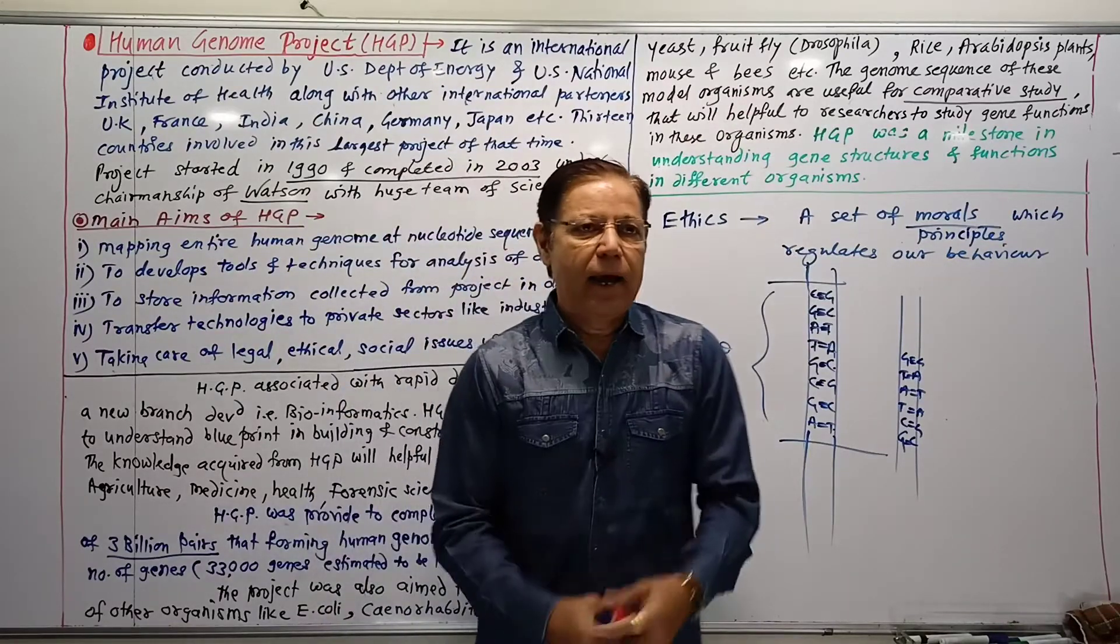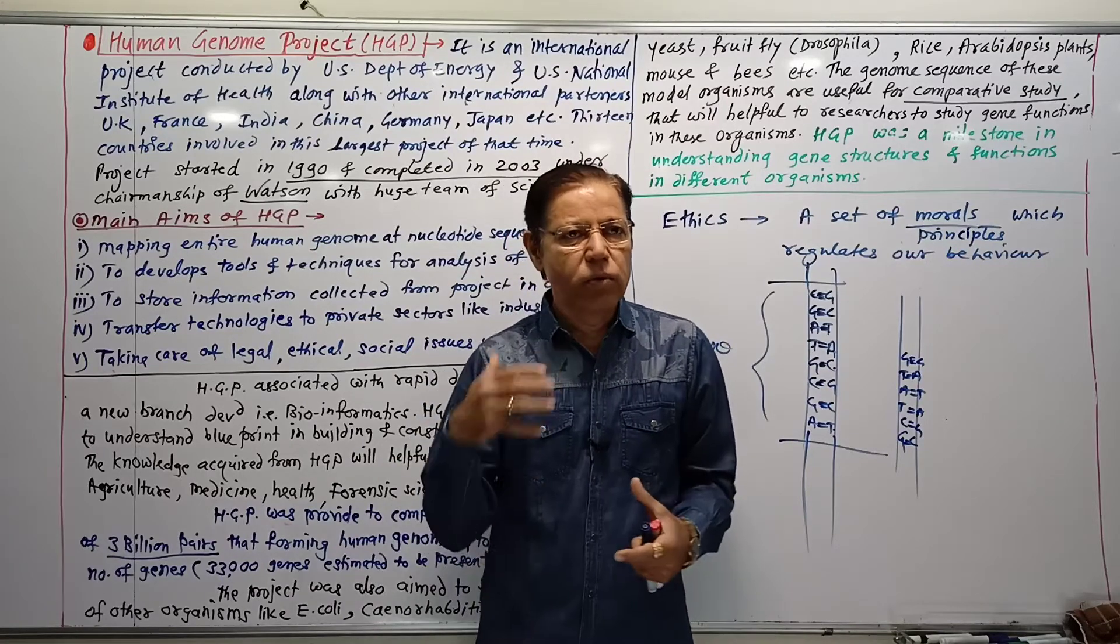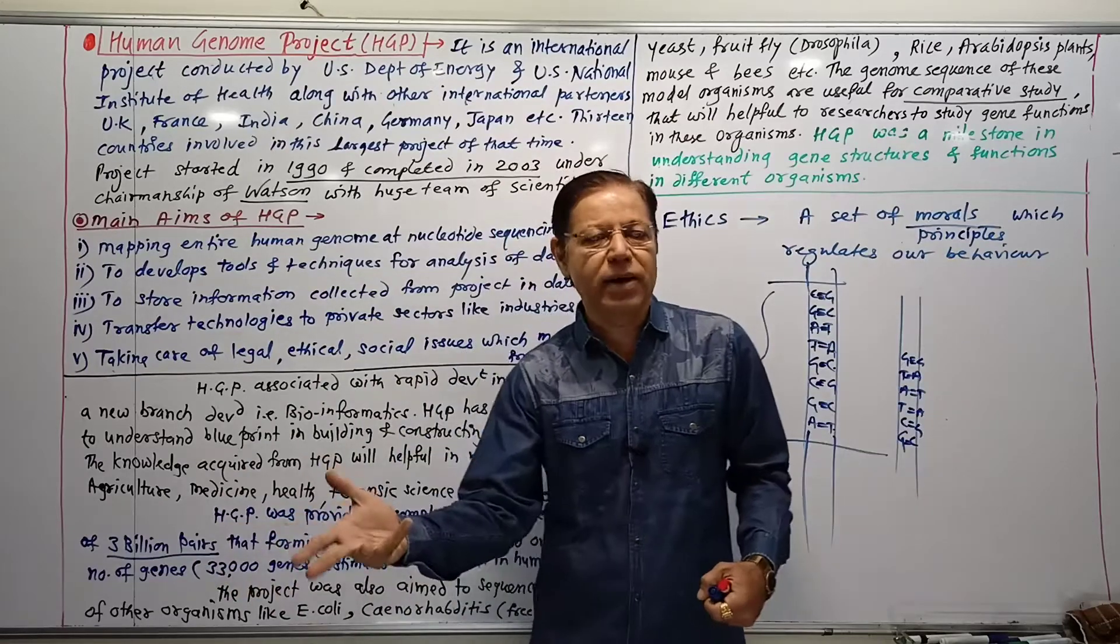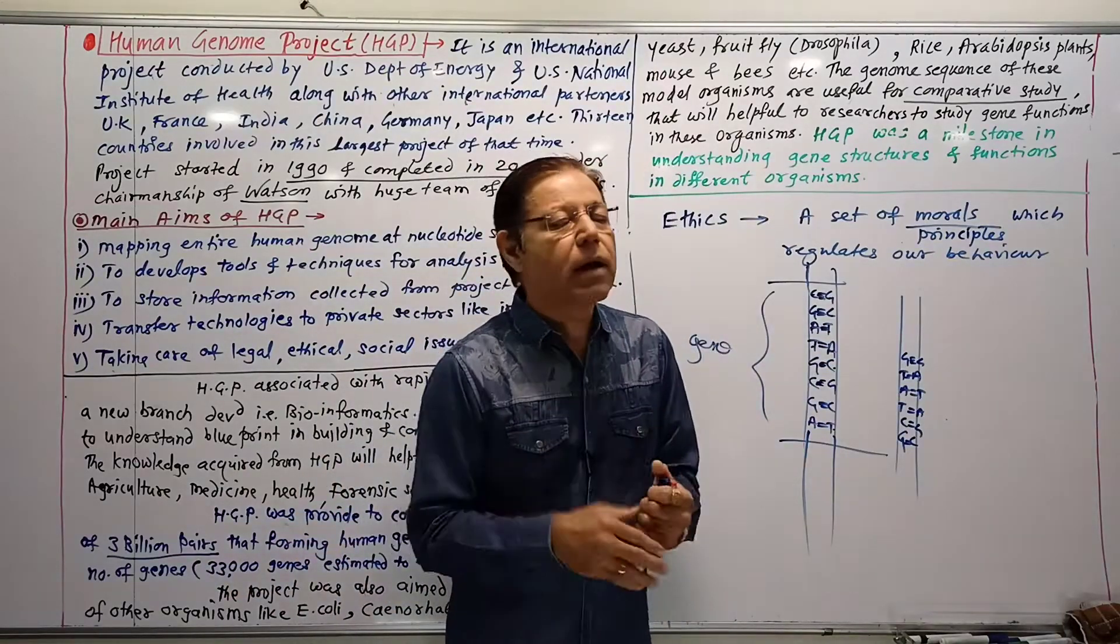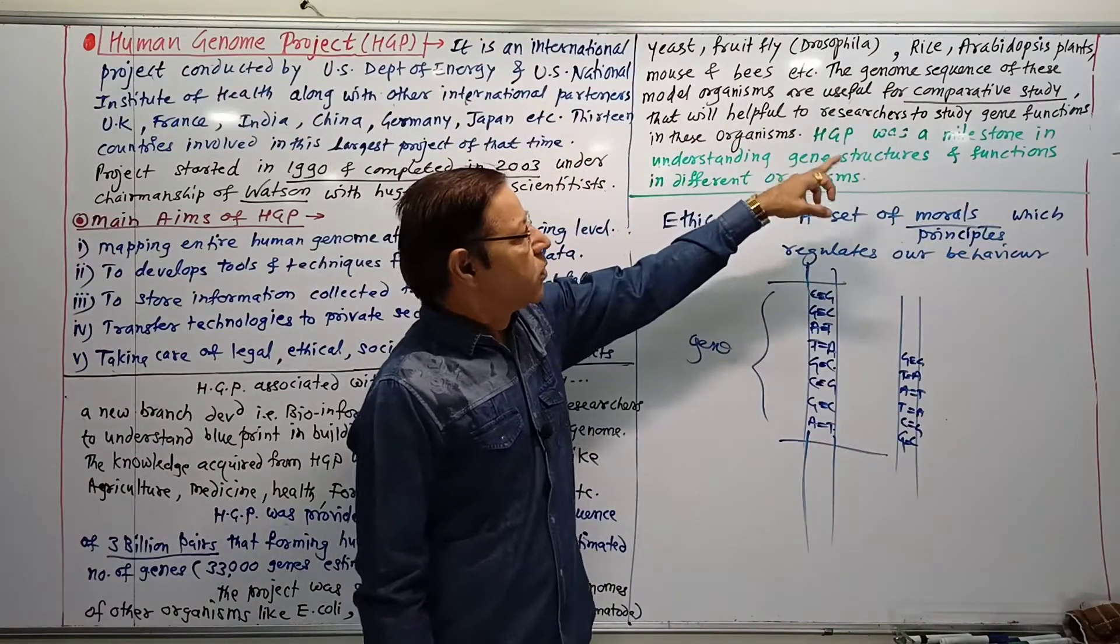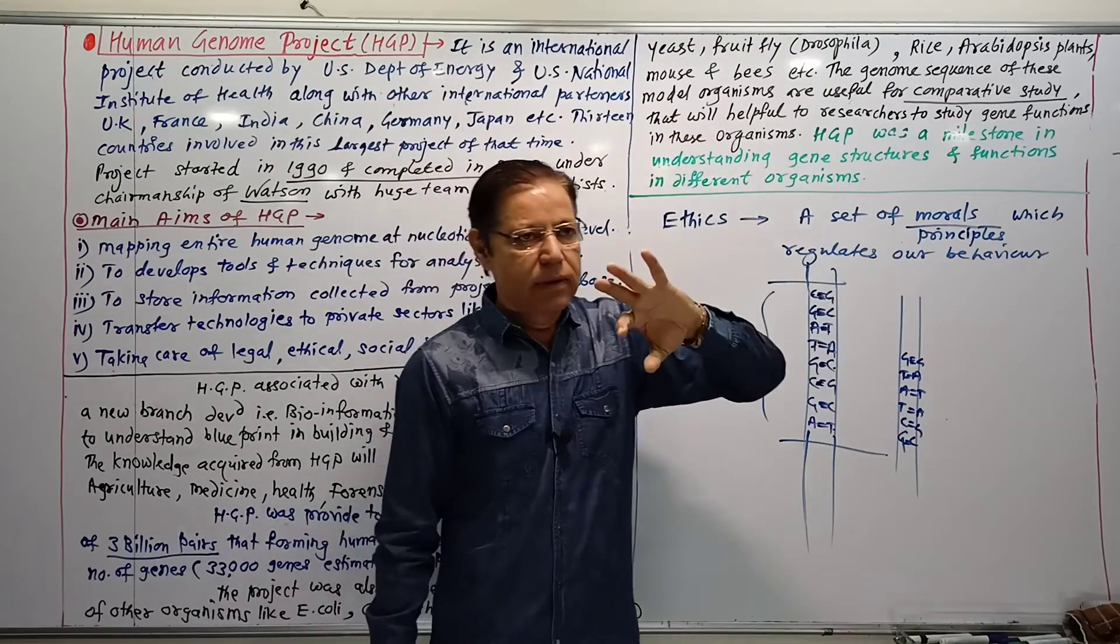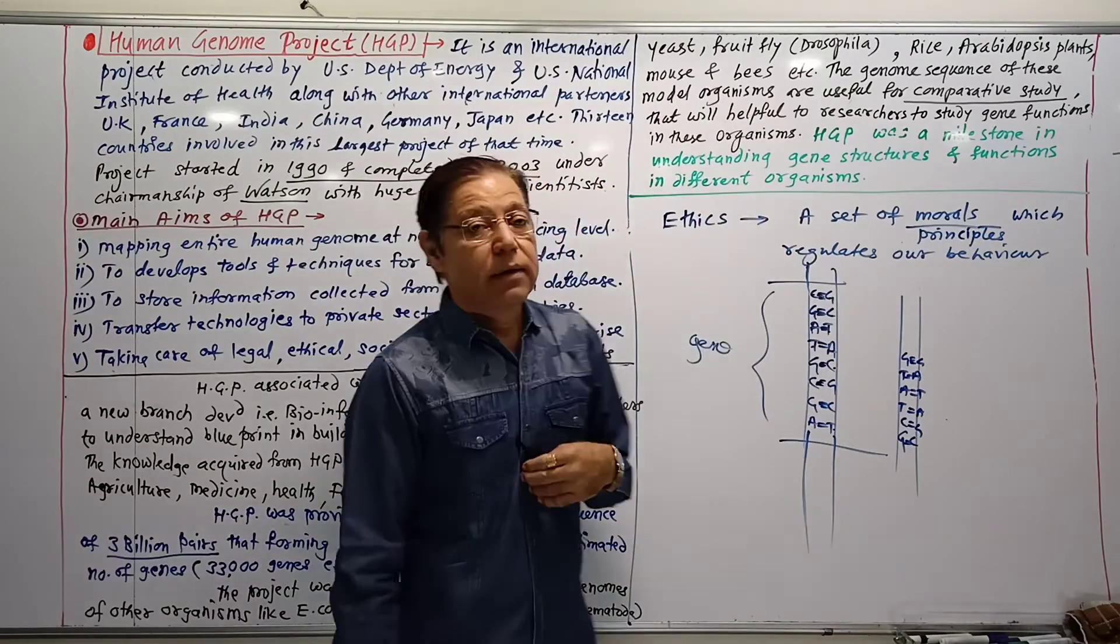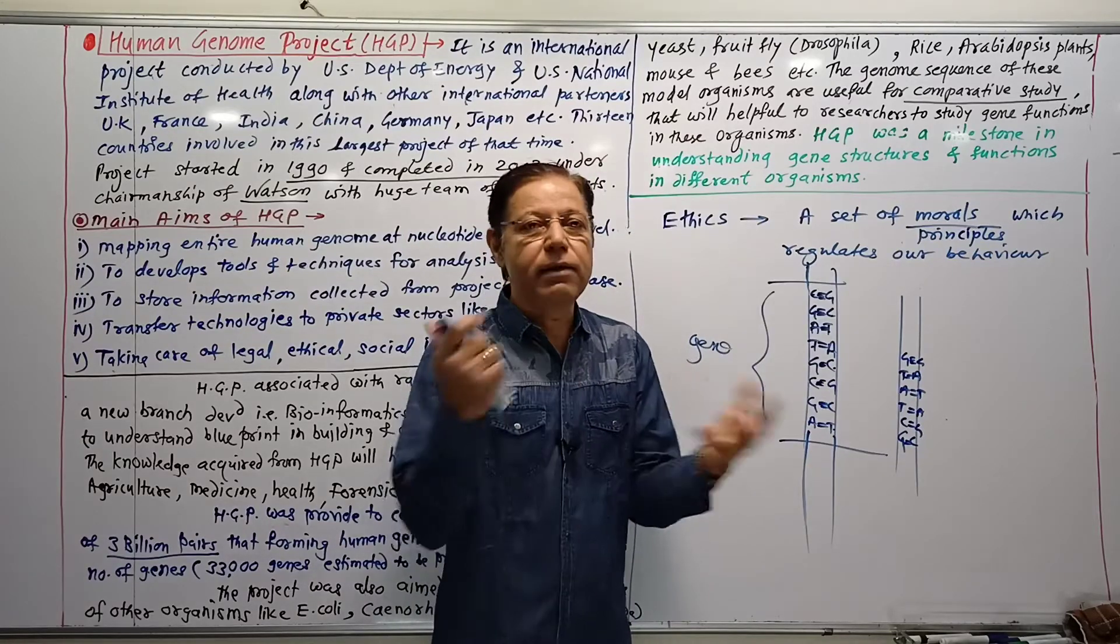Why did this parallel study of different organisms occur alongside the human project? For comparative study. This is helpful to researchers to study gene functions in organisms. Comparative study is very important in genetics, helping us understand the function of genes in different organisms.